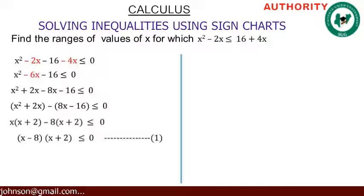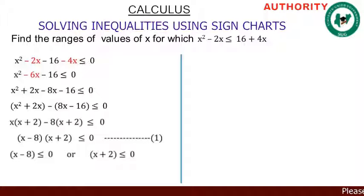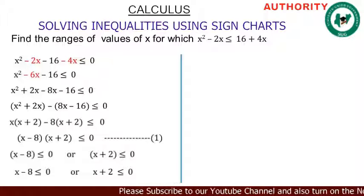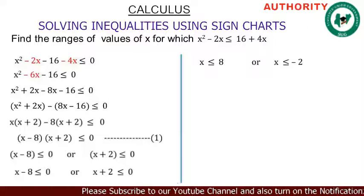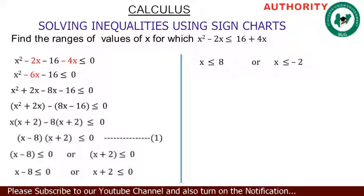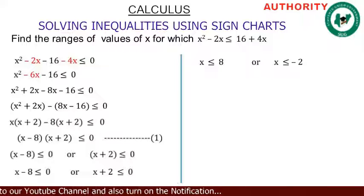Pay attention to this level because we'll use it in the future. We have x minus 8 less than or equal to zero, or x plus 2 less than or equal to zero. Solving these gives x is less than or equal to 8, or x is less than or equal to minus 2. So we end up with two critical values: 8 and minus 2.